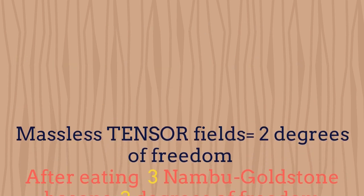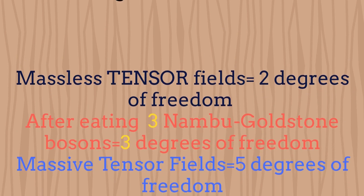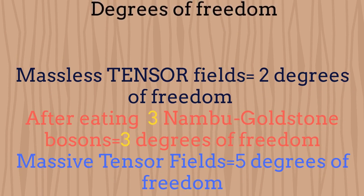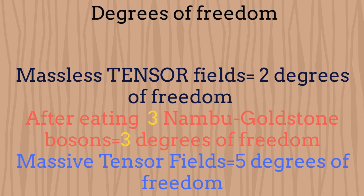If we repeat the same reasoning for the case of a tensor field, it turns out that for the tensor field to become massive, it has to eat at least 3 Nambu-Goldstone bosons. This is the case because a massless tensor field, being spin 2, carries 2 degrees of freedom, while this same field, being massive, would carry 5 degrees of freedom.